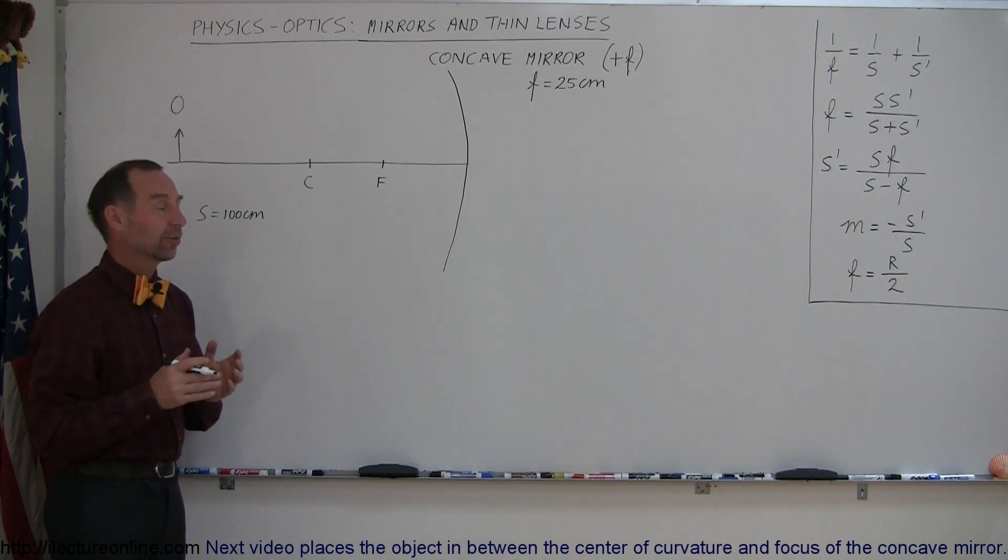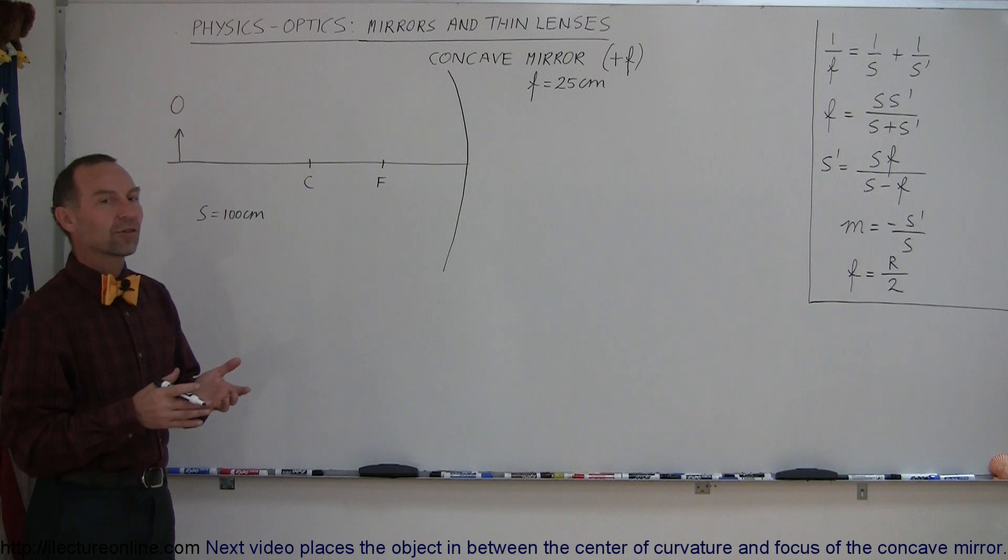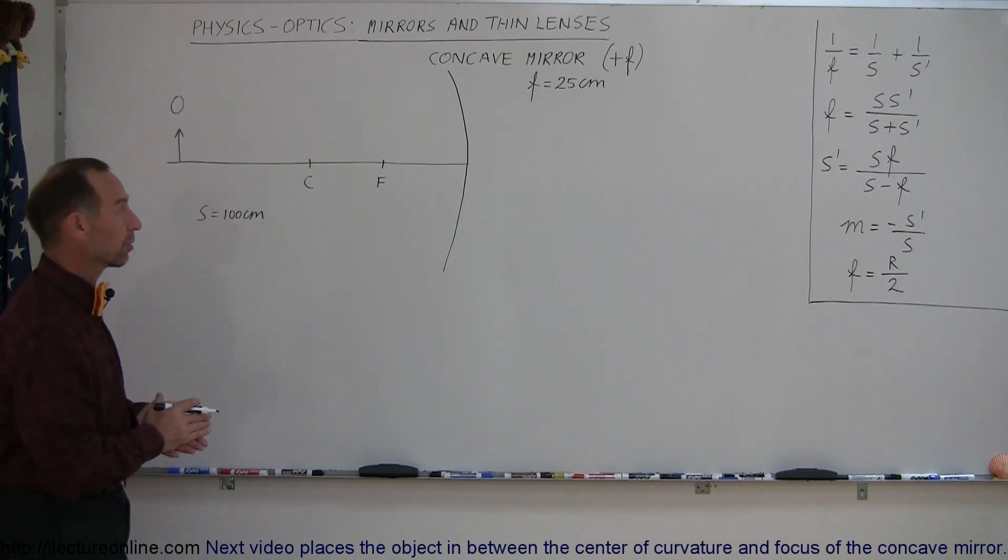Actually, you don't place objects behind mirrors because then you're not going to see anything, but in lenses you could. And also, there may be some virtual images that are behind the mirrors and they'll play a role later on when we do multi-lens and multi-mirror systems. But we'll start off with something simple.